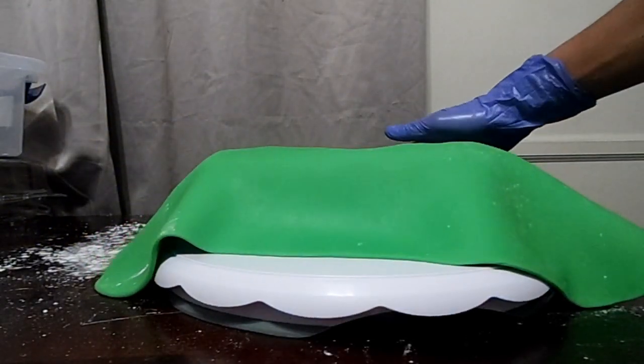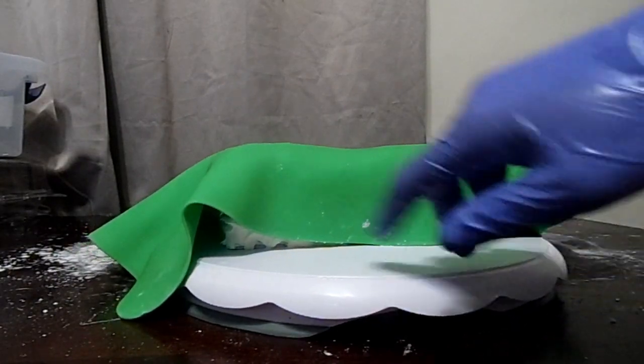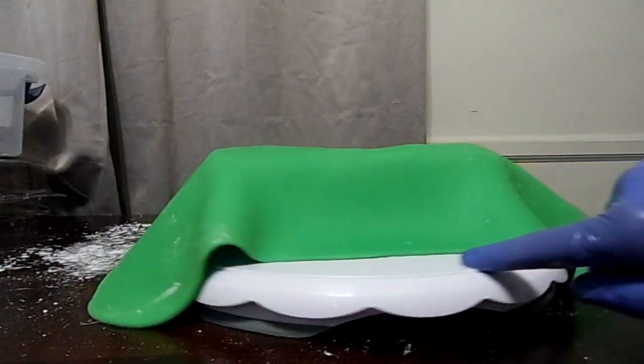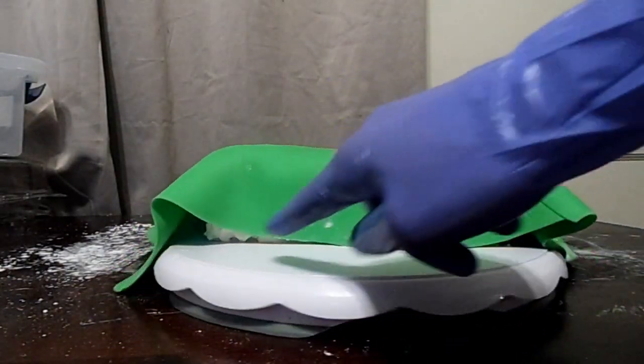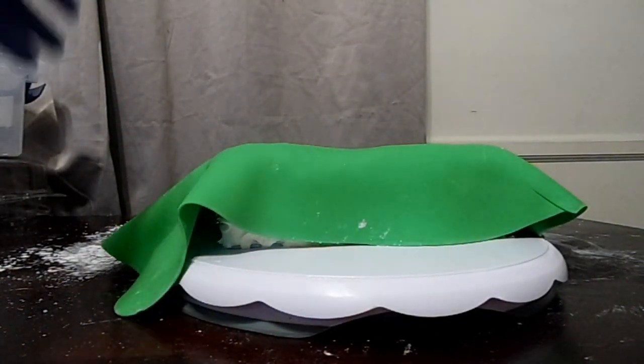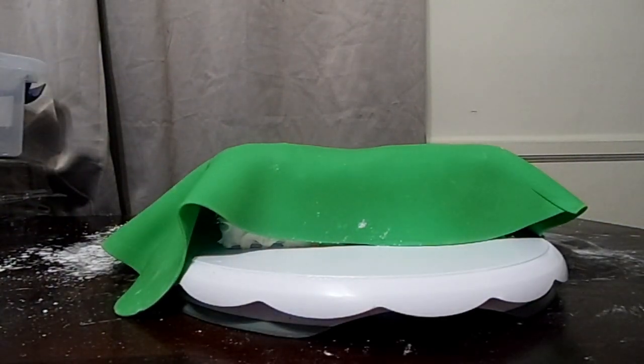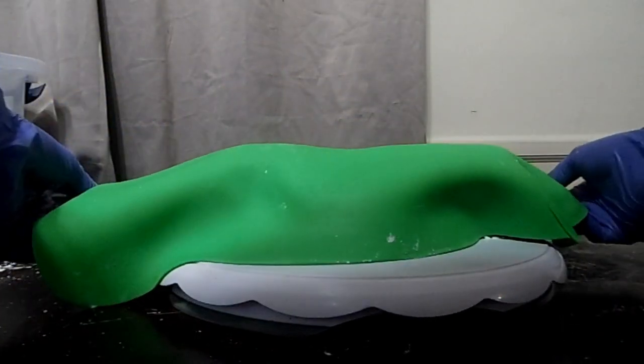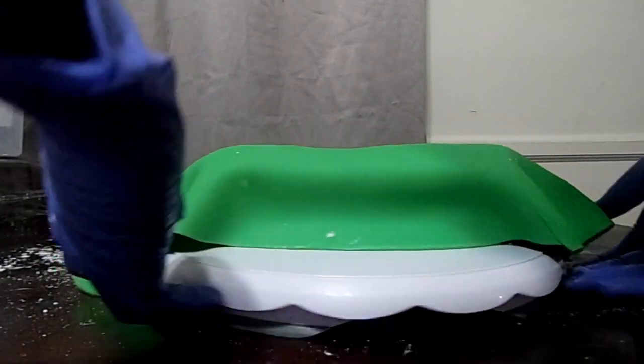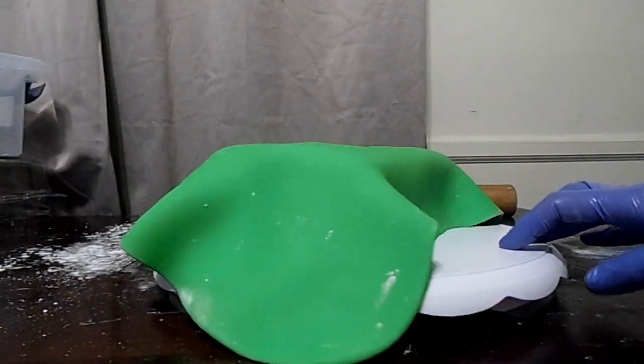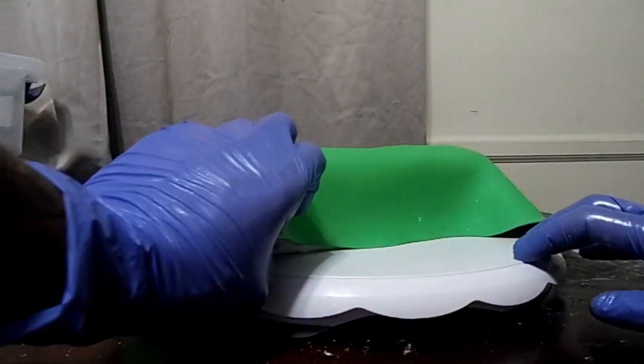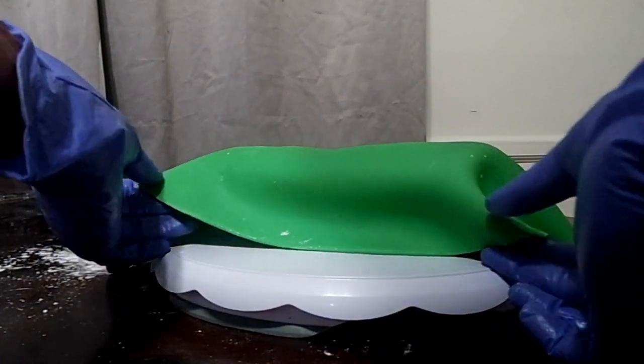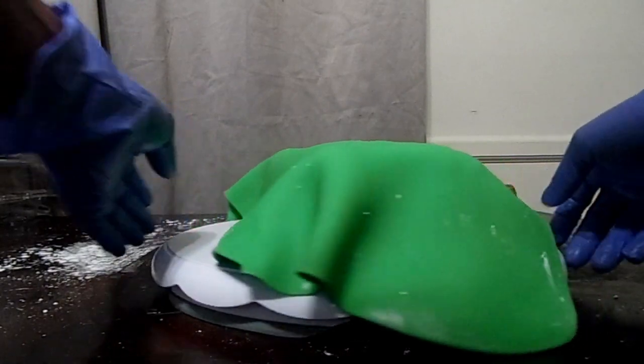And then I got some regular fondant rolled out. I colored this fondant green. It was white. Depending on how thick you rolled your fondant out, you can move it. Because as you can see here, I placed it on a little too short. So I had to keep adjusting it until it was covering the cake completely.